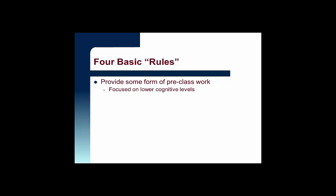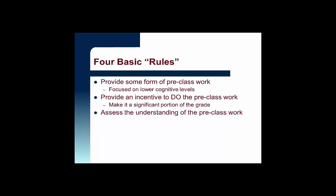Here are the four basic rules for flipped classrooms. Rule 1: Provide some form of pre-class work. Remember to keep it focused on the lower cognitive levels. Rule 2: Provide an incentive to do the pre-class work. I find that making it a significant portion of their grade is pretty effective. Rule 3: Assess the understanding of the pre-class work. You want to be sure that they got the information they needed. This could be through a quiz, a study guide, discussion, or a review of the material at the start of class.